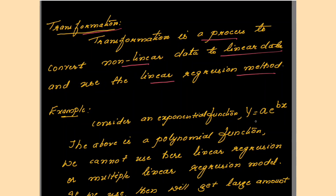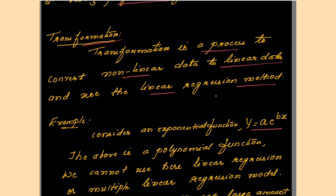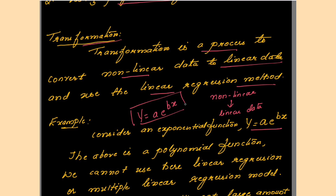Transformation is a process to convert non-linear data to linear data and then use the linear regression model. For example, consider an exponential function y = a × e^(b×x). Because your data is non-linear, you first have to convert this into linear data. This exponential function represents a polynomial function which represents non-linear data.